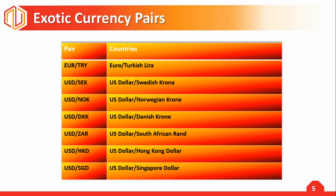Exotic currency pairs are made up of a currency paired with the currency of an emerging or strong but smaller economy from a global perspective, such as Hong Kong, Singapore, or European countries outside the eurozone. These pairs are not traded as often as the majors or minors, so the cost of trading them can be higher due to lack of liquidity, and the spreads on exotic currency pairs are generally quite high.